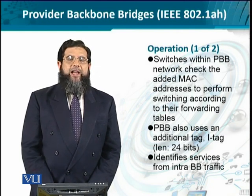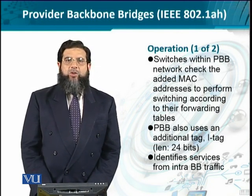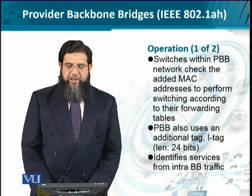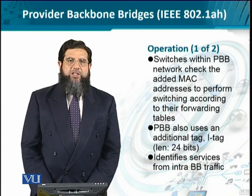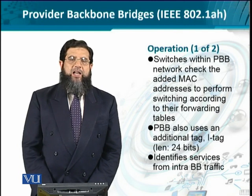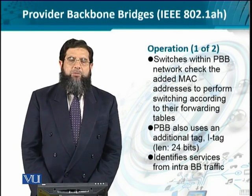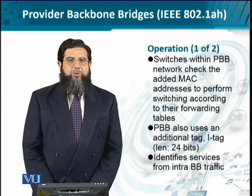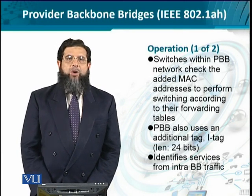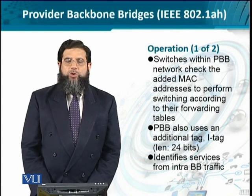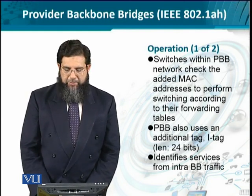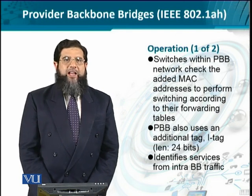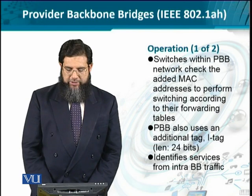You may wonder why the I-tag is 24 bits. There is a very interesting reason. When we talk about intra-provider or intra-customer network traffic, we are dealing with a limited number of nodes. But when we talk about provider networks, there could be numerous or uncountable provider networks that the backbone must connect. So, to keep it scalable and serve multiple provider networks, the tag length has been kept double — 24 bits compared to the 12 bits seen before.